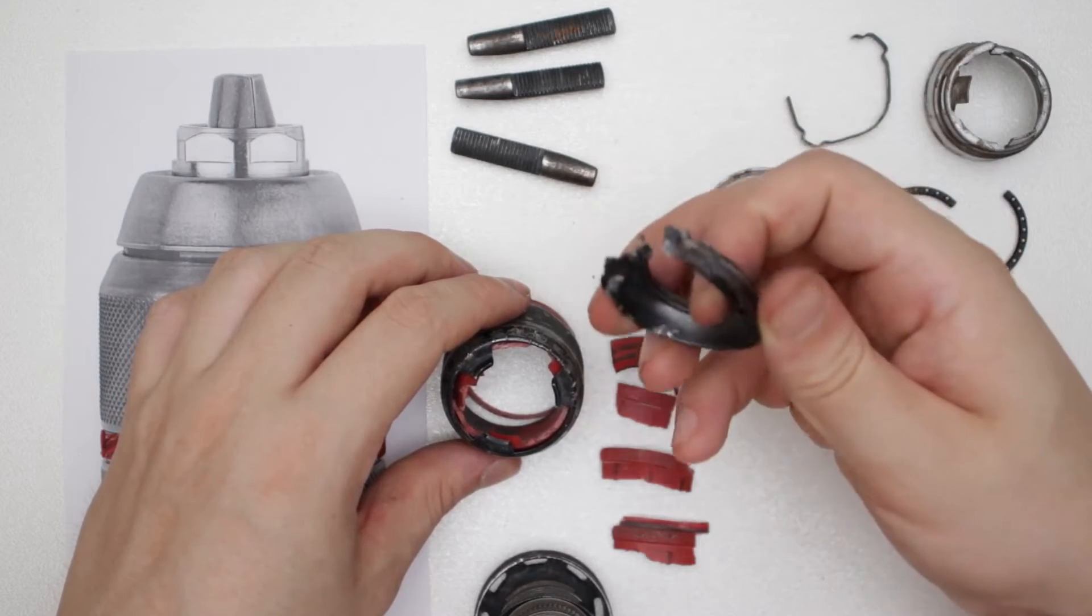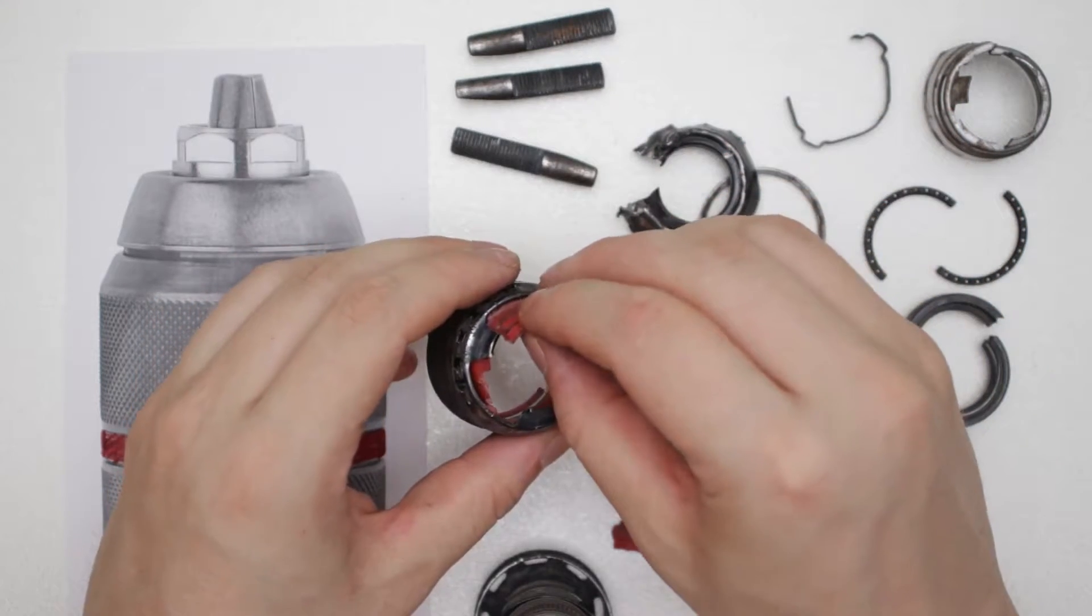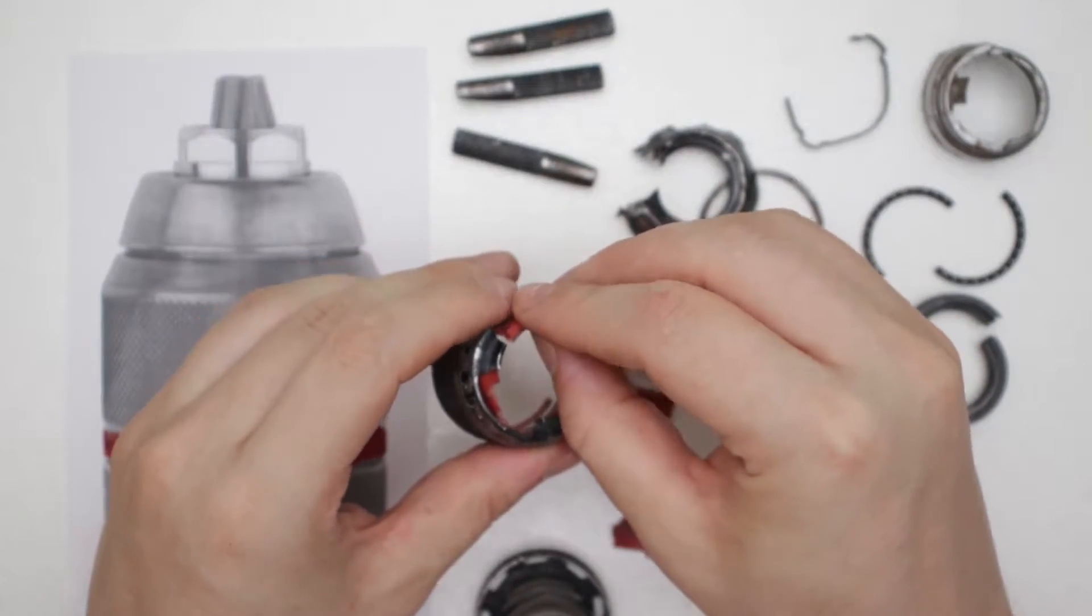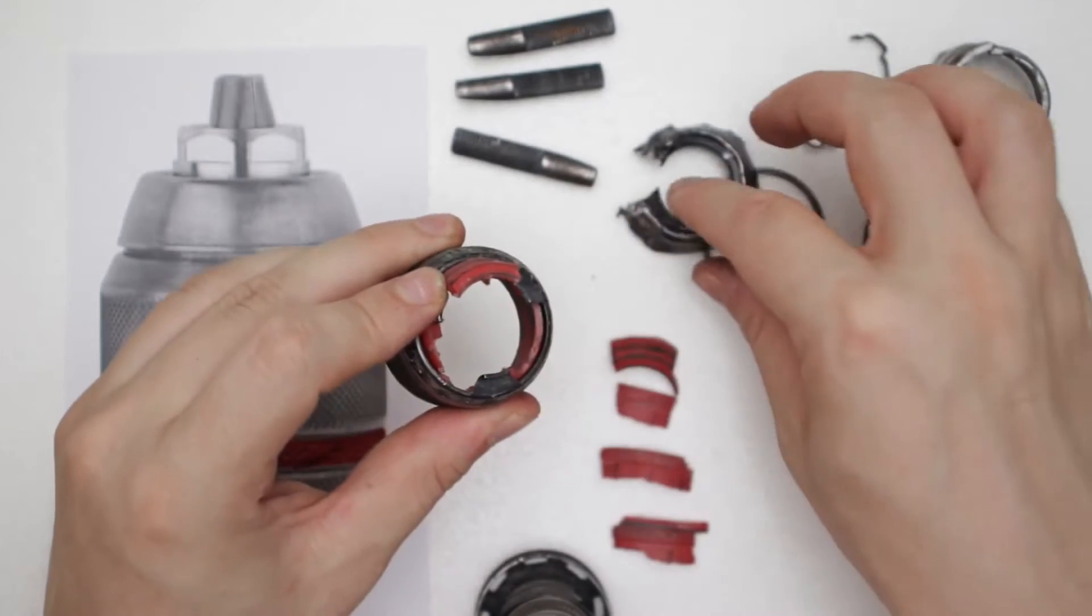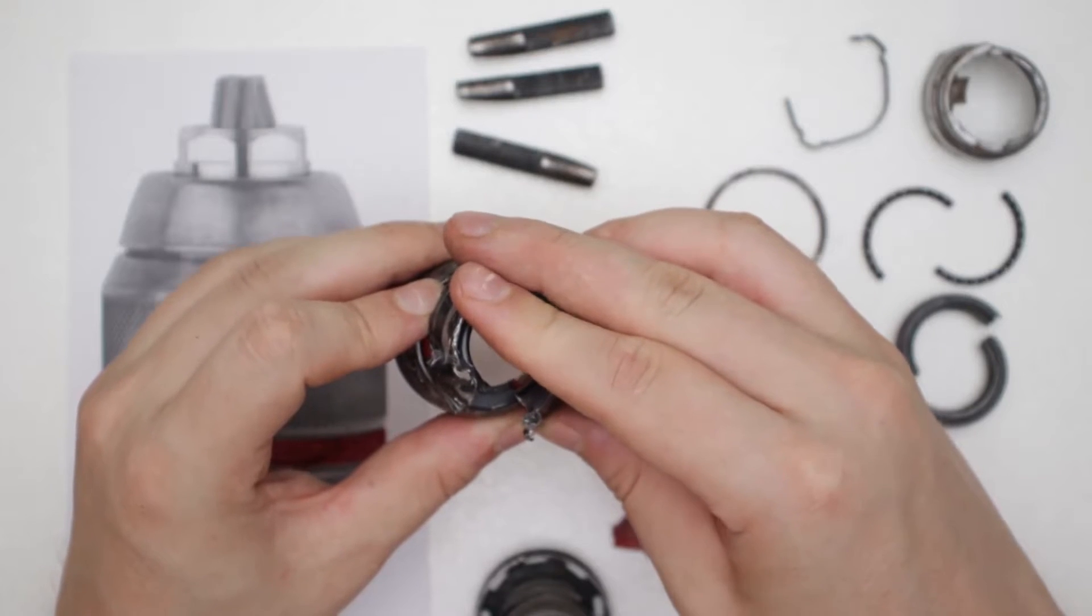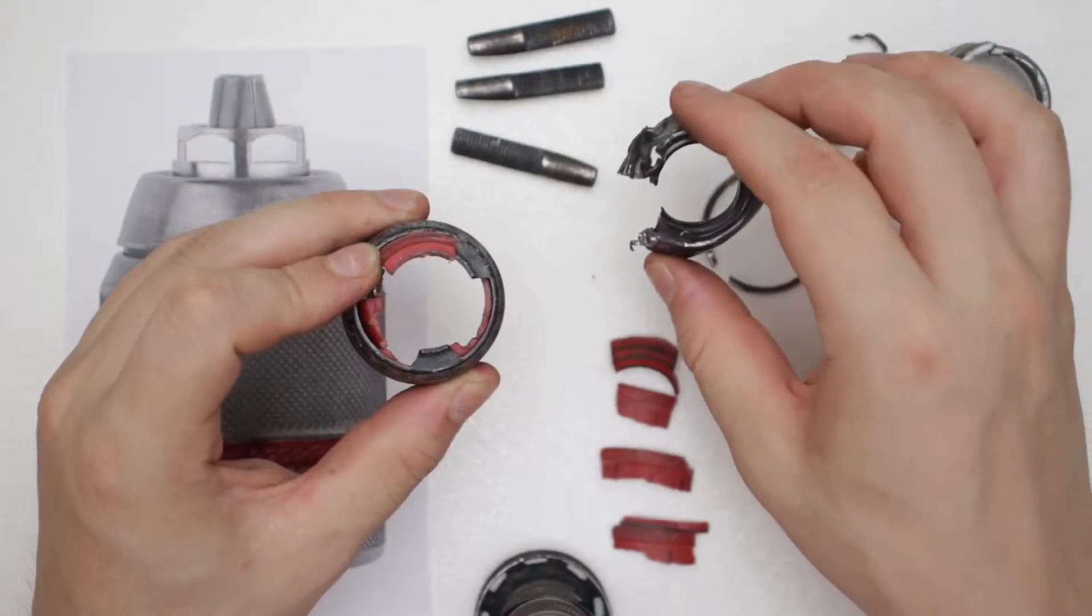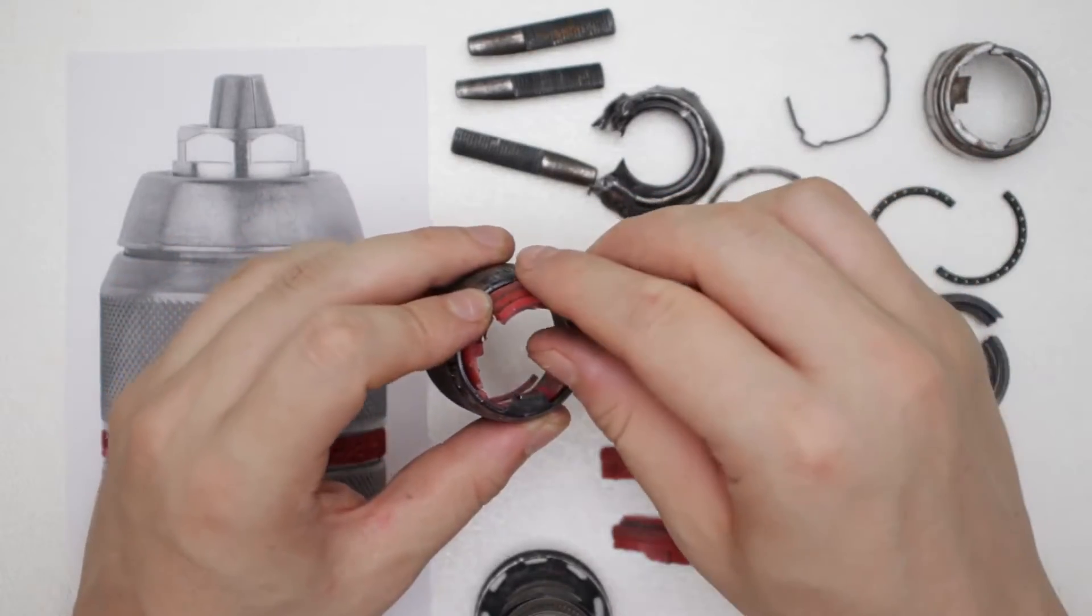The ring, this dust cover, snaps onto these things that extend here. So it goes like this and I think the dust ring snaps on top of them, which is why it is so annoying to disassemble because it's like a snap that cannot be taken off easily.